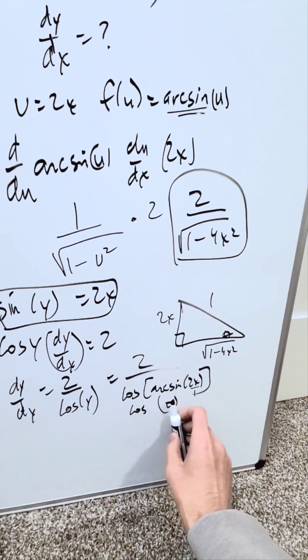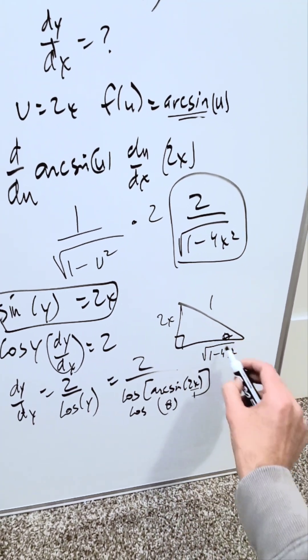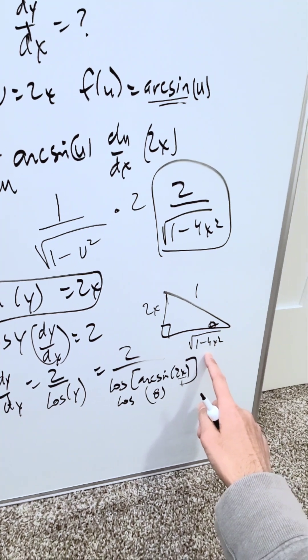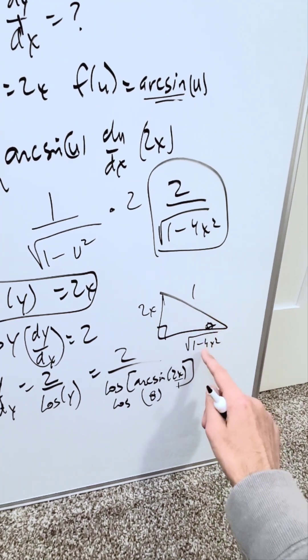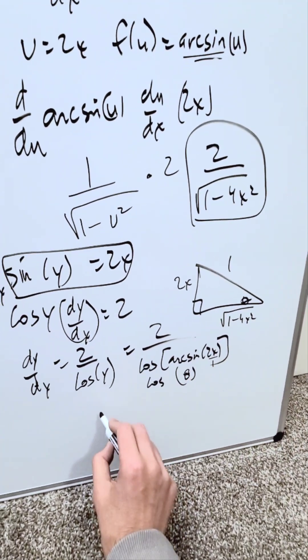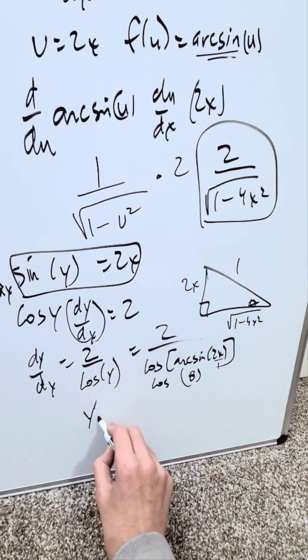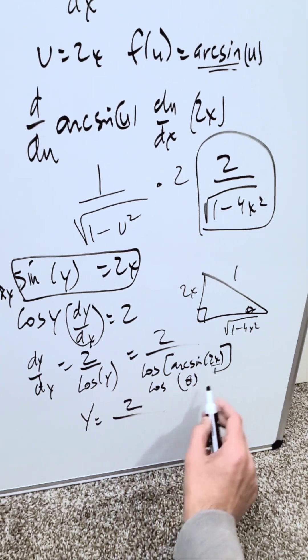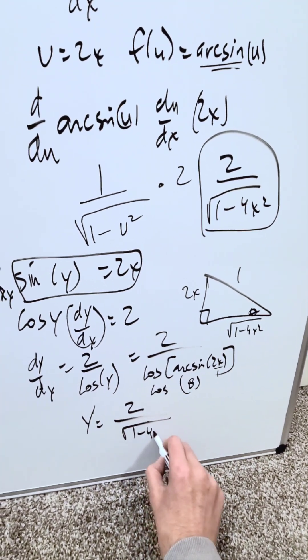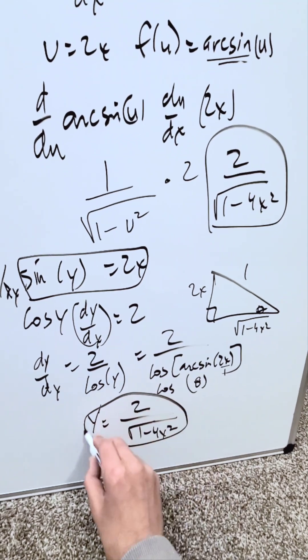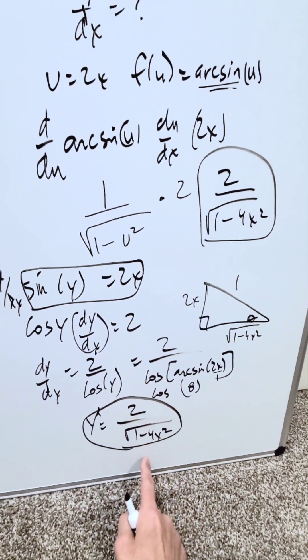Now I can easily determine cosine of the angle theta by means of this triangle. Cosine of that theta is adjacent over hypotenuse, which is just this. I now know my derivative y prime or dy/dx is equal to 2 over cosine theta, but I know cosine theta is this. 1 minus 4x squared and a root. And here is your answer done another way.